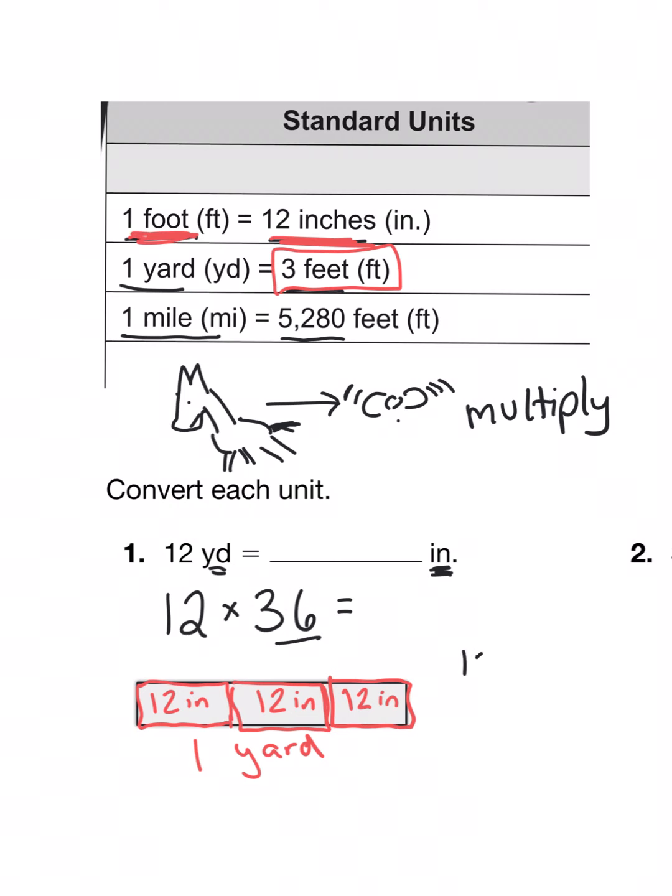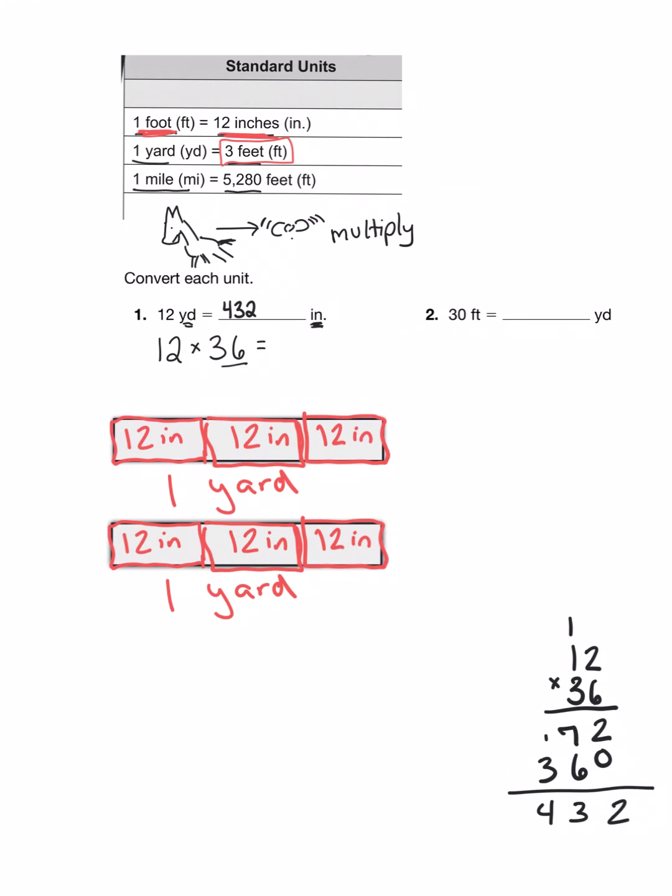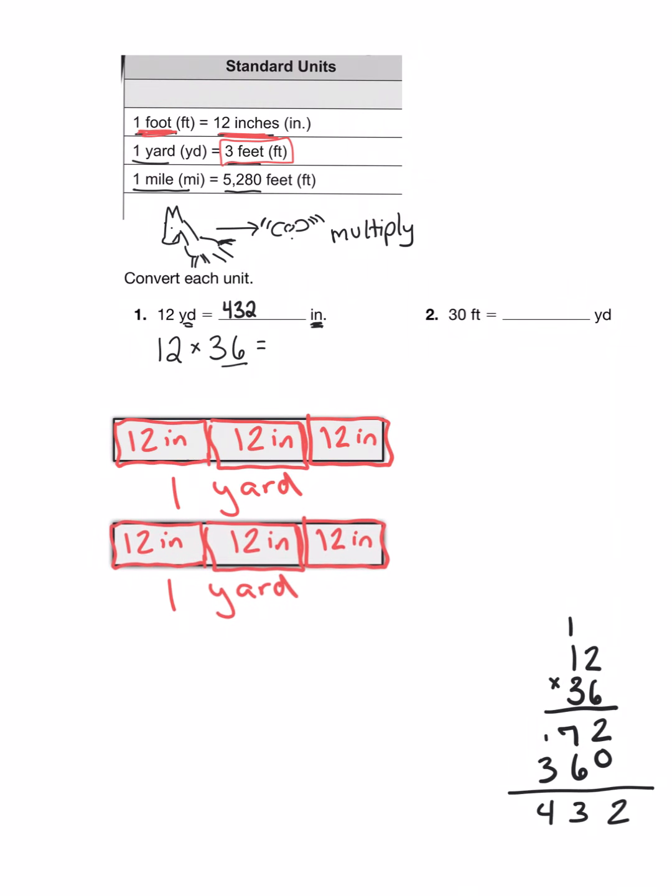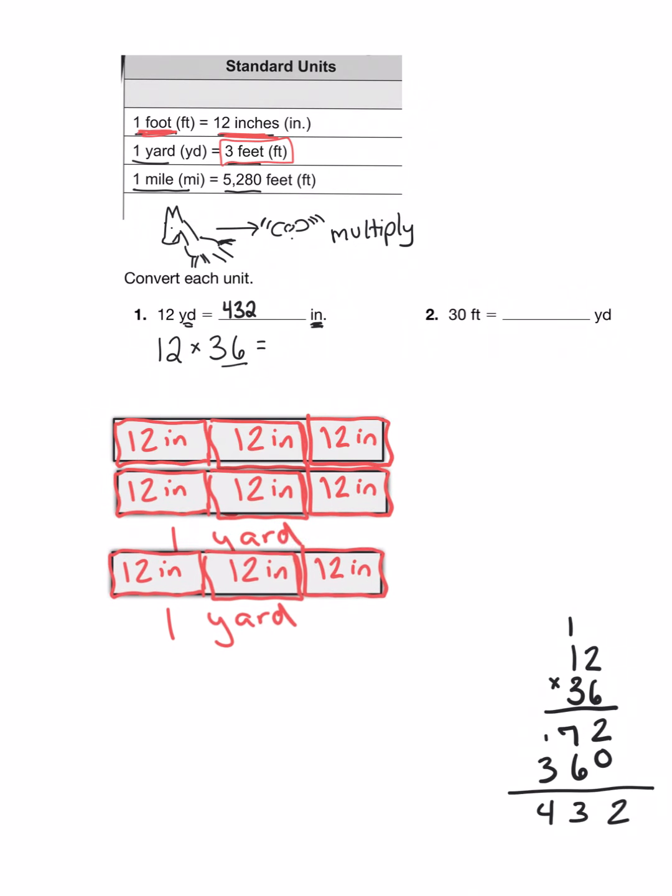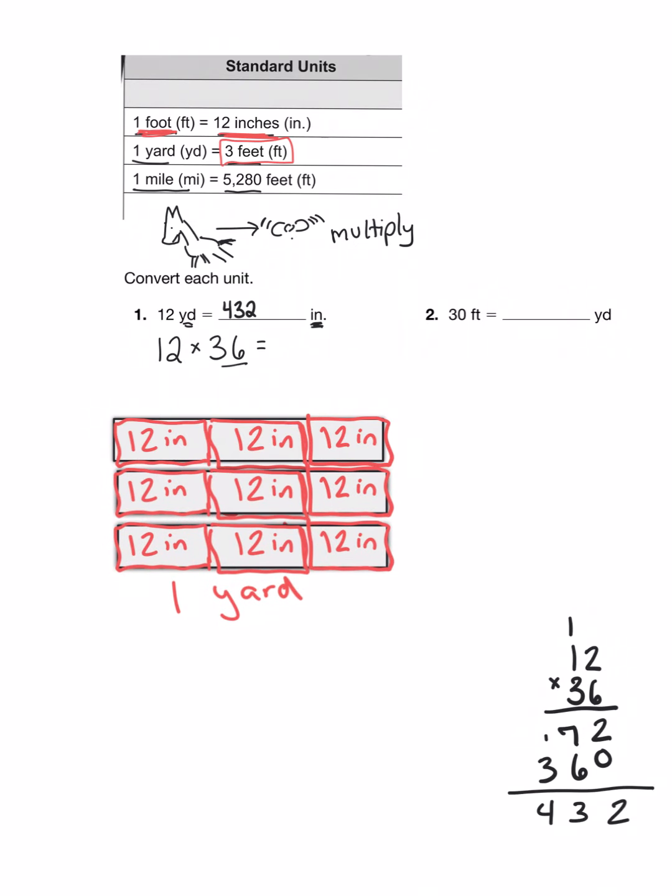Now in order to multiply those it's going to be easier for me if I set it up like this. And then I can just do my U.S. standard algorithm for multiplying. So when I'm done with that multiplication I can see that in 12 yards I have 432 inches. Now if you wanted to see that visually I could show you, well here's one yard with 36 inches, here's two yards with another 36 inches, and here's three yards with another 36 inches, and then I would just keep going and going and going until I had 12 yards all together.